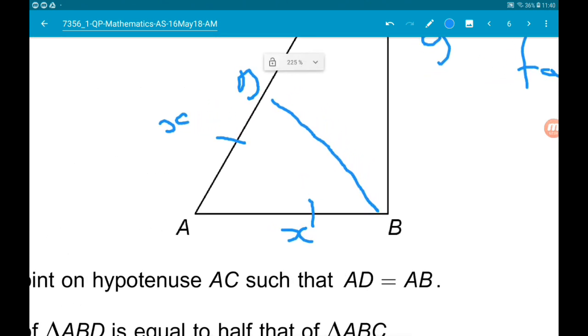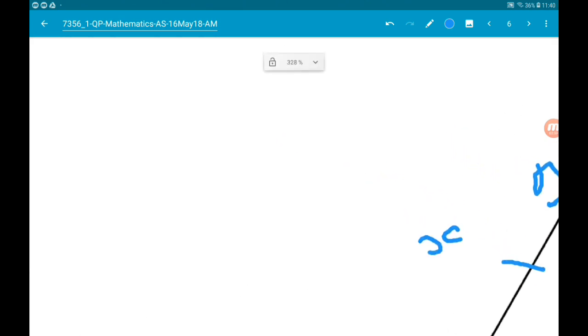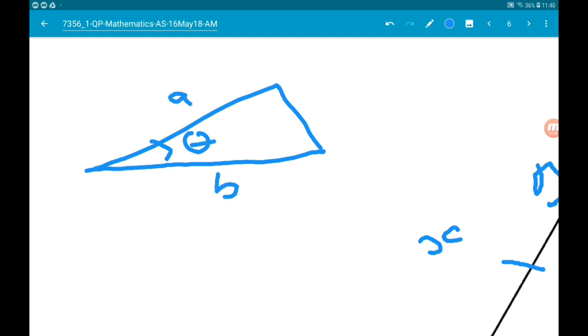Now then, can we work out the area of ABD? Not as a number, but we can certainly get an expression for it. Remember, in a triangle, if you have an angle theta, and we know the two side lengths coming out of it,